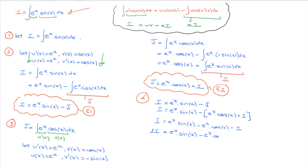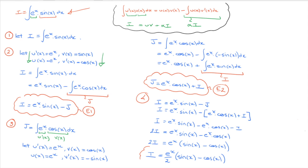So we have 2I equals e^x times sine of x minus e^x times cosine of x. Placing exponential of x as a factor on the right-hand side: 2I equals e^x times (sine of x minus cosine of x). Dividing throughout by 2, the answer is I equals (e^x / 2) times (sine of x minus cosine of x). We've just integrated this product using recursive integration by parts. We could of course add a generic constant of integration.